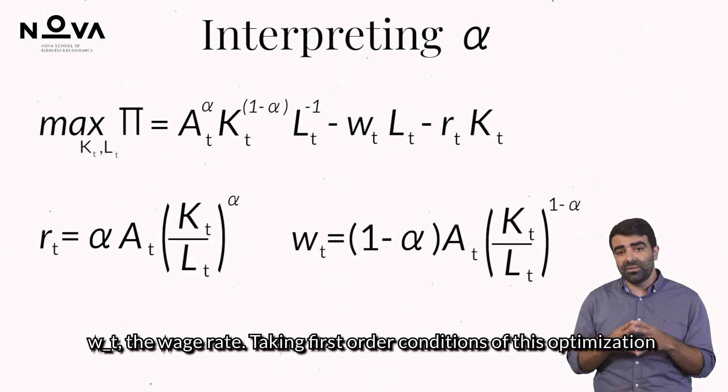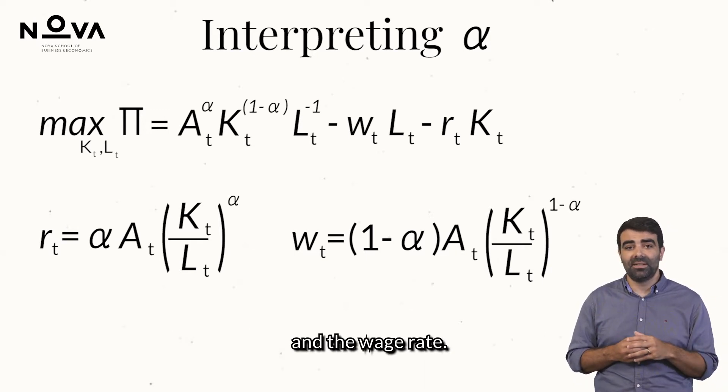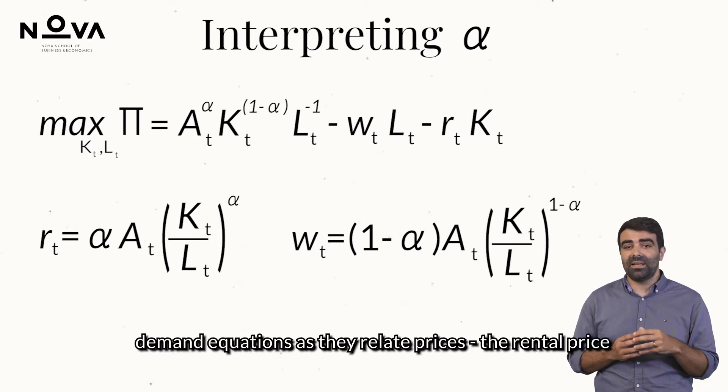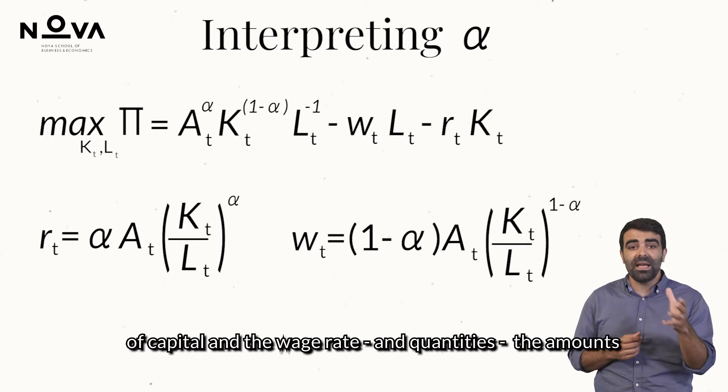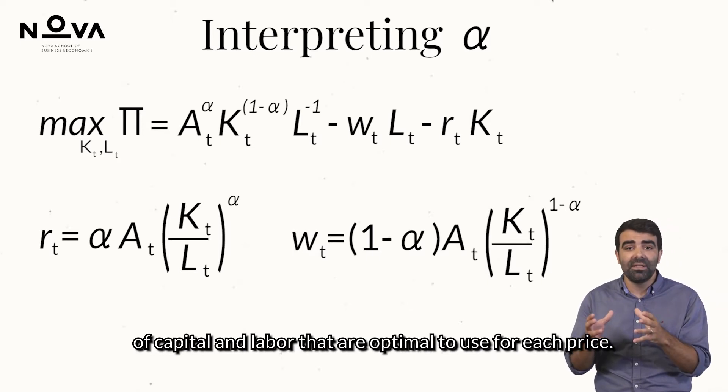Taking first-order conditions of this optimization problem, we get expressions for the rental price of capital and the wage rate. These are capital and labour demand equations as they relate prices, the rental price of capital and the wage rate, and quantities, the amounts of capital and labour that are optimal to use for each price.